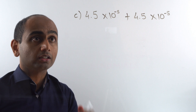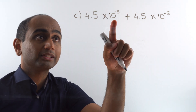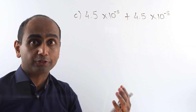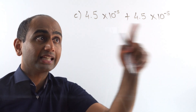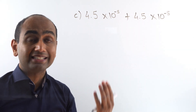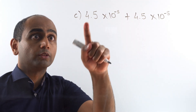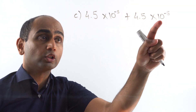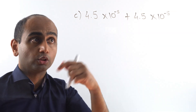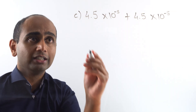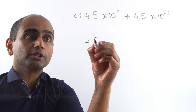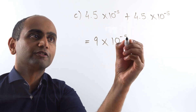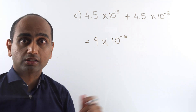Here's question C. I've got 4.5 times 10 to the negative 5 plus 4.5 times 10 to the negative 5. Again I've got the same powers of 10 so that makes this easy to add. I've got 4.5 lots plus 4.5 lots of the same quantity, so 4.5 plus 4.5 is 9, which means I've got 9 lots of 10 to the power of negative 5, and there's my answer.